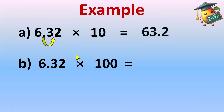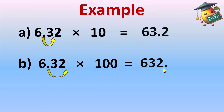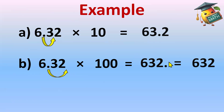Part B: we have 6.32 again, multiplied by one hundred. Hundred has two zeros, so the decimal will shift right by two places. The answer will be 632. Since the decimal is at the end, we only have the whole part, so we can write it without a decimal as six hundred thirty-two.